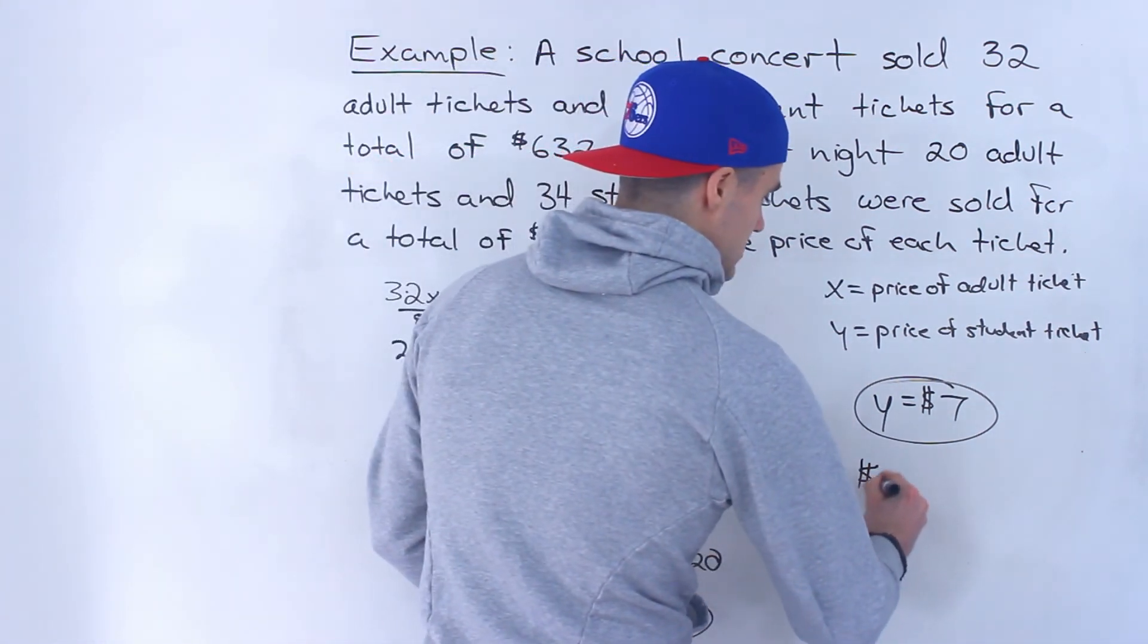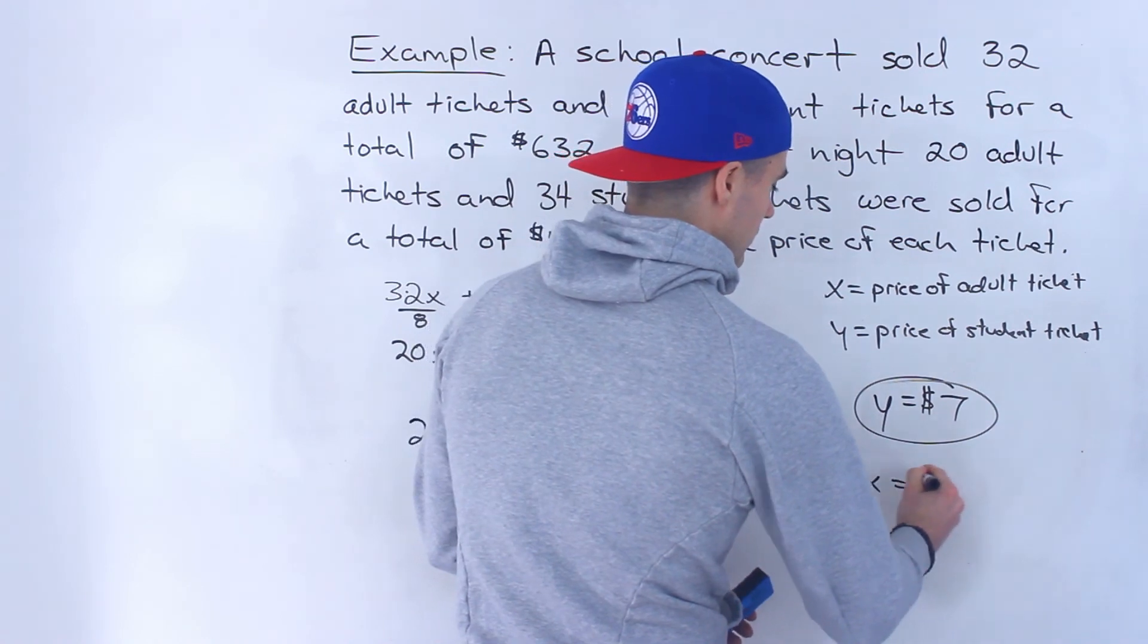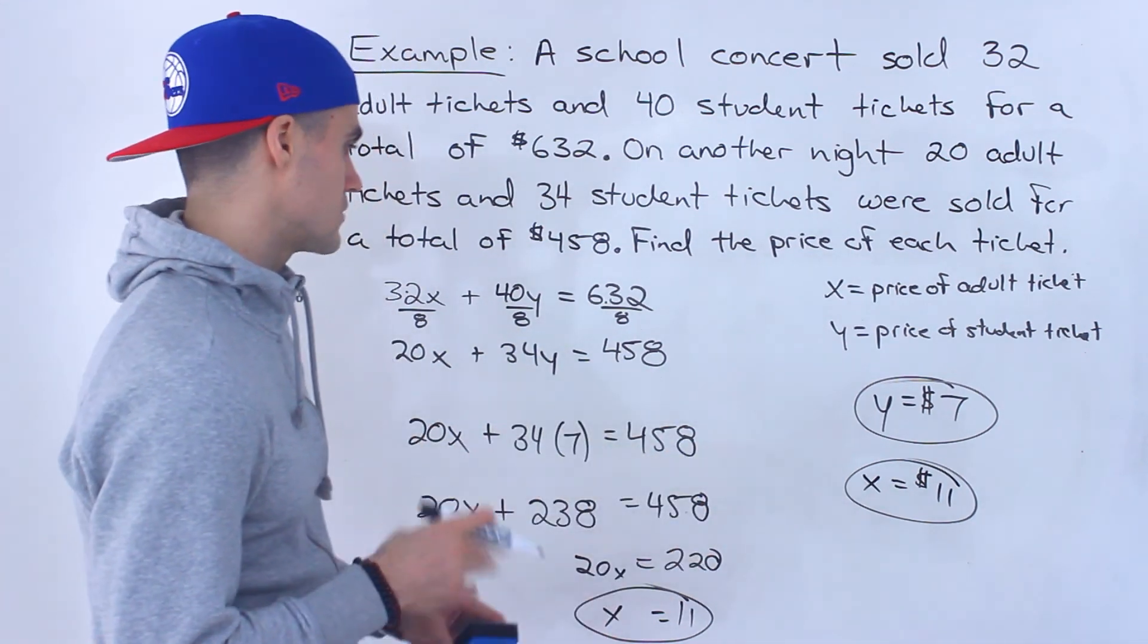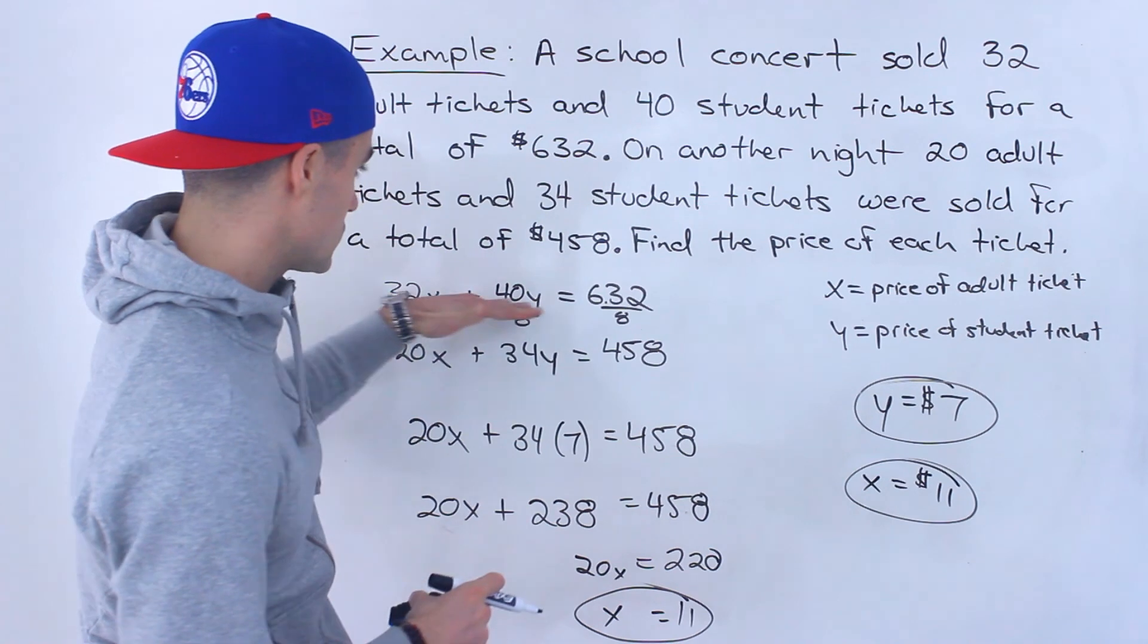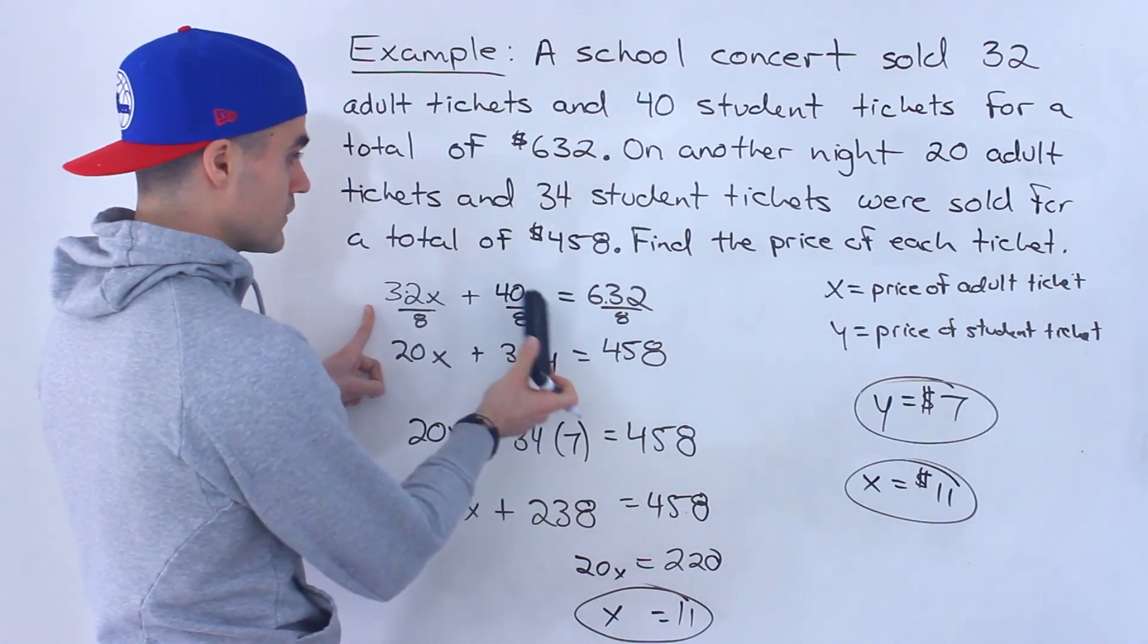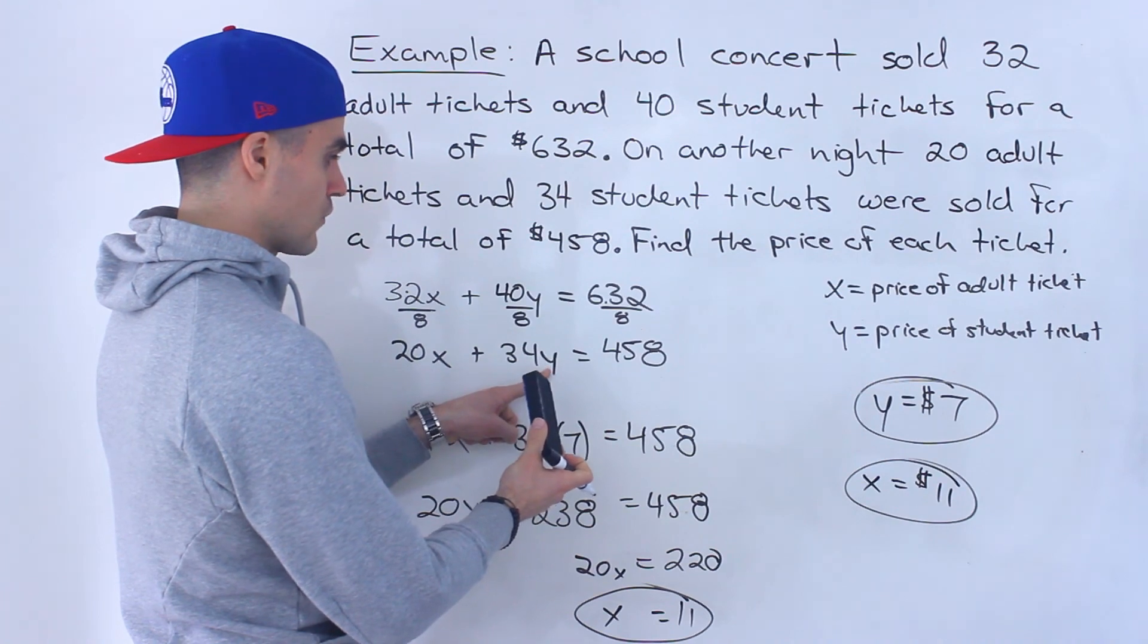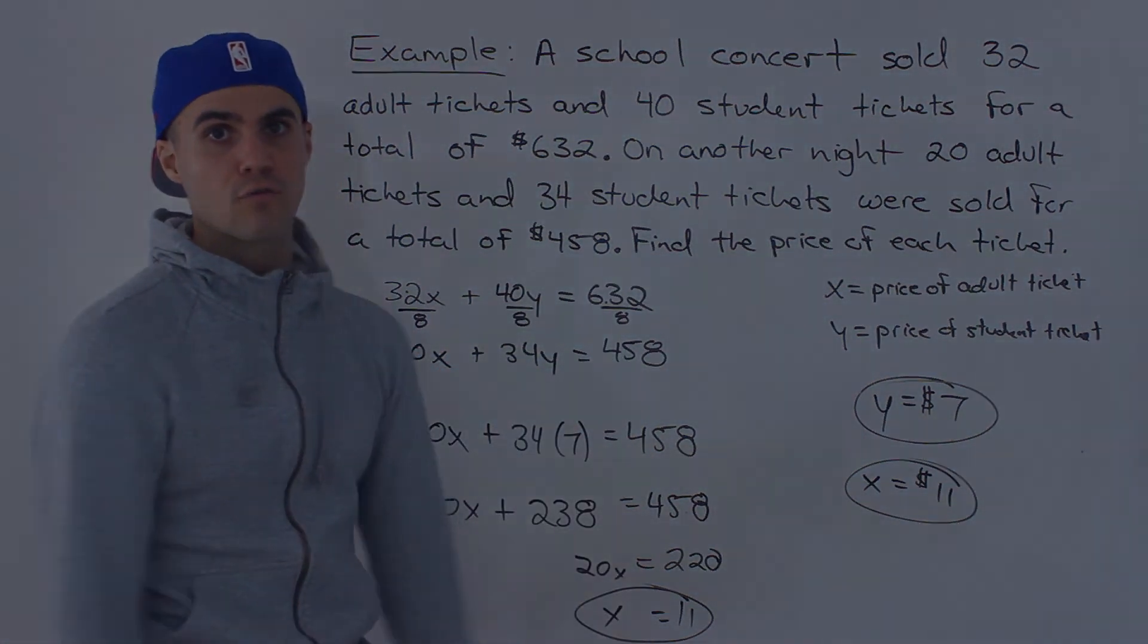So that's the price of an adult ticket. That's the final answer. If you want to make a concluding statement, you can also do that as well. And then you can also check this. You could take this, plug it into the original equations, make sure that when we plug in X of 11, Y of 7, we would get 632. And then over here, we would plug in 11 for X, 7 for Y, multiply these, then add them, and we should get 458.